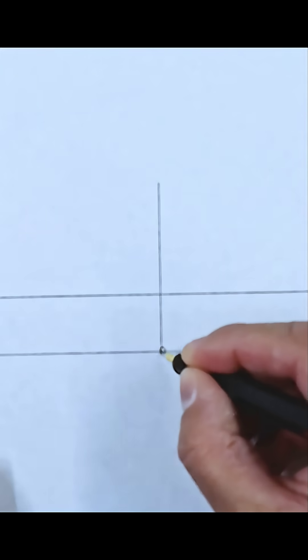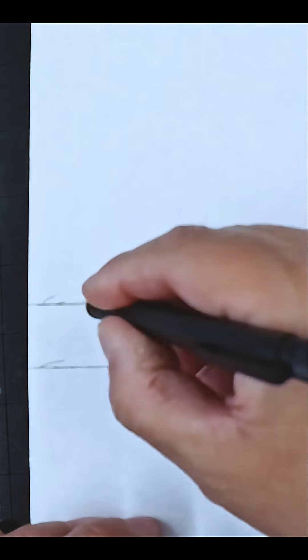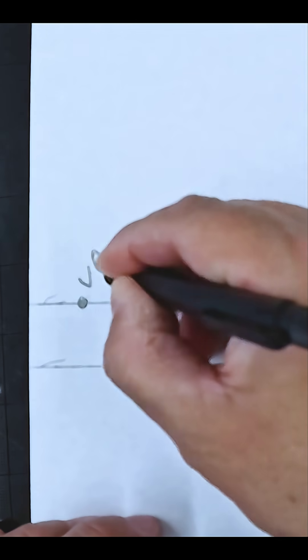Draw a vertical line from the baseline. Determine where your two vanishing points will be.